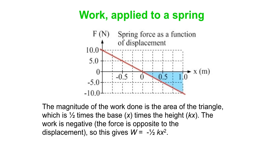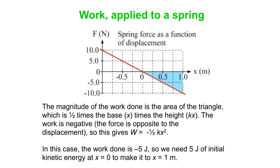So the magnitude of the work done is the area under the curve, but that's just a triangle. So that's one-half the base, which is x, times the height, which is kx, so we get a work which is minus one-half kx squared. So in this case the work is simply minus 5 joules, and so we need 5 joules of initial kinetic energy. So the block makes it all the way to x is 1 meter.